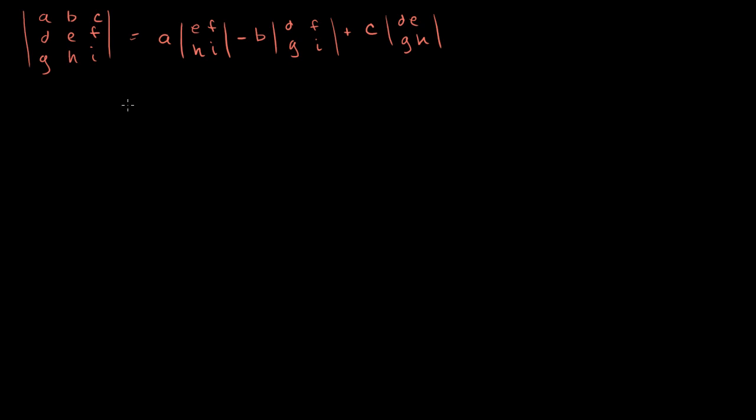This is going to be equal to A times EI minus FH. And this is going to be minus B times DI minus FG.